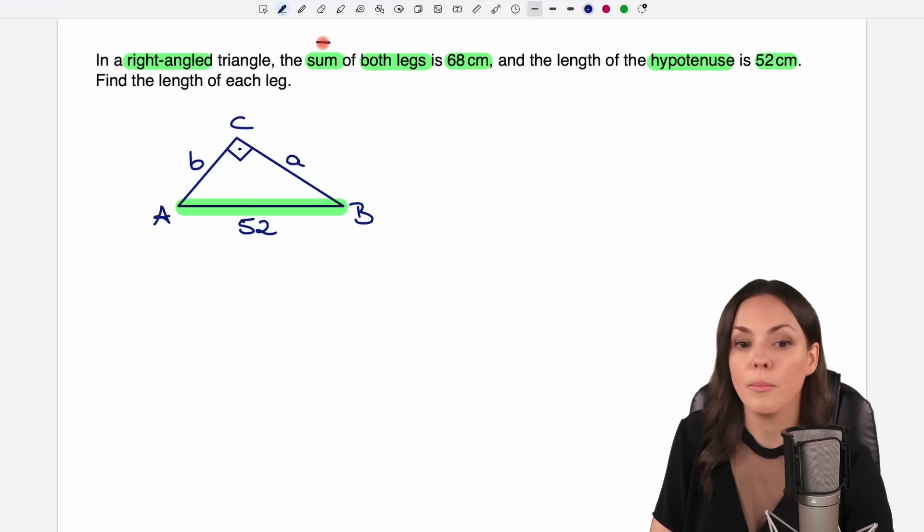They tell us that the sum of both legs is 68. So the sum means plus if I add the length of these legs. So if I take A and add B, then I get a length of 68, which gives me an equation. But in this one equation, we have two variables in here. So we would need a second equation to be able to solve for A and B.